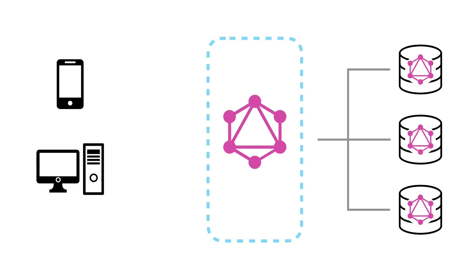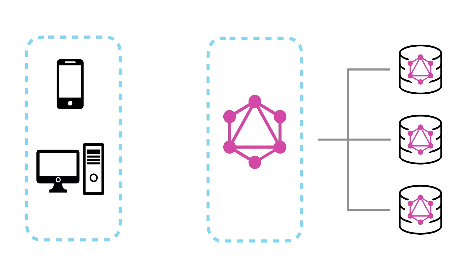From your frontend application, you often interact with a GraphQL API using HTTP as a transport layer. Although GraphQL is transport layer agnostic, it's often implemented using HTTP.